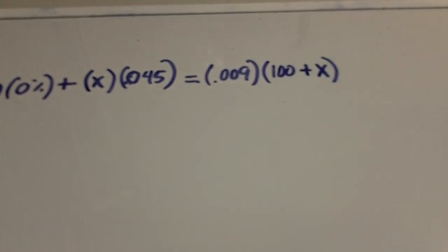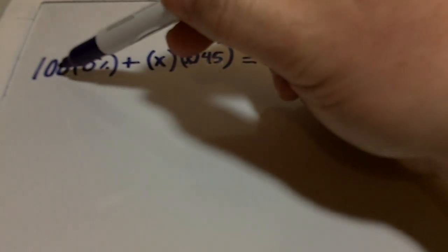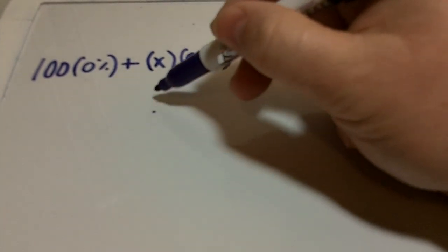Okay, so let's go ahead and work out all the math. So 100 times zero is zero, so we're not going to write anything down here. And then x times 0.045 is 0.045x. Put our equal sign again.